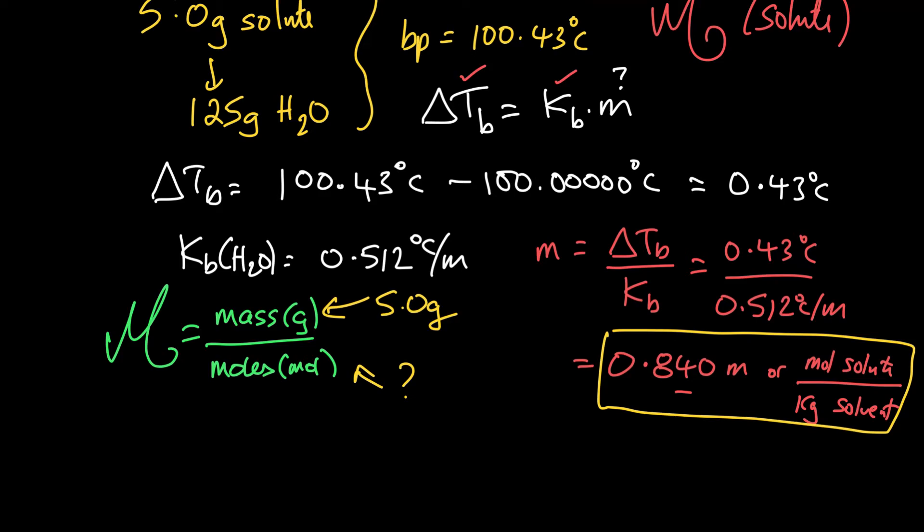Well, we know that there's 0.84 moles of solute in every kilogram of solvent. And how many kilograms of solvent do we have? Well, we got 125 grams. That is 0.125 kilograms of solvent. We can use that as a conversion factor.